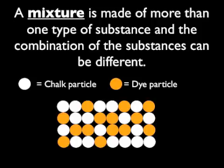I also can understand what a mixture is now. A mixture is made of more than one type of substance, and the combination of substances can be different. The polka dot chalk wasn't right for our lab if it was to be used as an example of a substance, because it didn't contain the same type of particles all the way through. It had both chalk particles and particles of orange dye. This polka dot chalk is a much better example of a mixture.